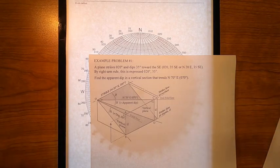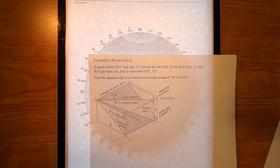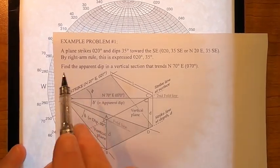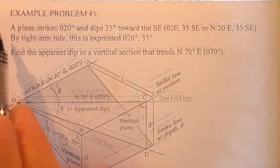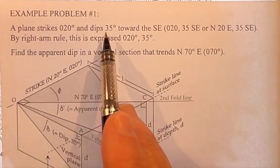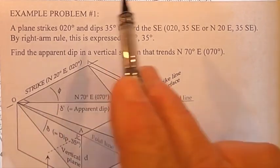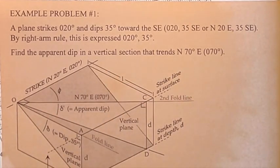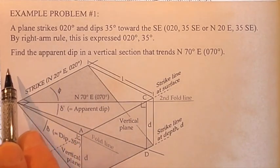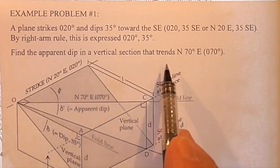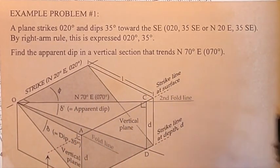Of course, I'm going to take my time to explain the steps as I go through it now. Let me remind you that it states that a plane strikes 020 and dips 35 degrees toward the southeast. This is the very same wording we saw before. By the right arm rule, this is 020, 35 degrees. The task is to find the apparent dip in a vertical section that trends 070.